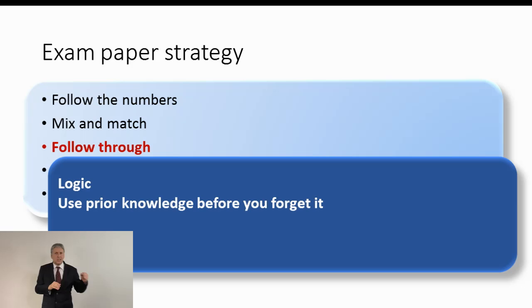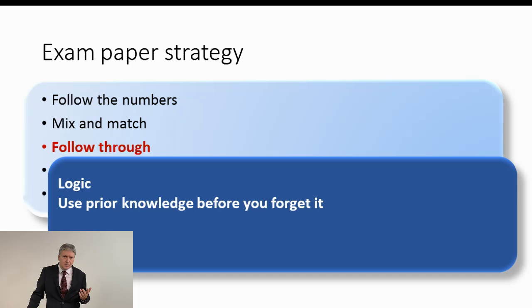So, moving on to follow-through. What I meant by follow-through was this. Use your prior knowledge before you forget it. Because, of course, if you've been listening to me, you'll have noticed that there are certain subjects that come up again and again and again. So, management accounting comes up again and again. F2, F5, P5. Financial accounting comes up again and again. F3, F7, P2, and so on and so forth. Tax, and they all come up again and again. So, maybe we could say, well, if you've got prior knowledge, if you know something, you want to use that knowledge before you forget it. So, here we go. F2 links to F5, F3 to F7, F7 to P2, P2 to P7, and others. So, you may want to do those quickly. But the trouble is, if you start looking at this too carefully, you will appreciate that there are certain limitations to how much you can do this. Because if you do F7 quickly after F3, then you can't do P2 quickly after F7. But you may decide to adopt this if a particular circumstance arises, if that makes sense to you.